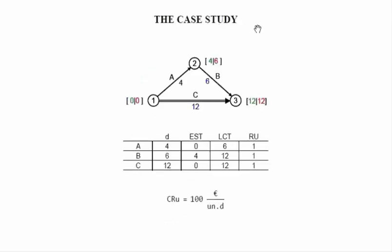In the case study we are going to use, we have a simple project composed of three activities A, B, and C. Activity A has a duration of 4 days, B is 6 days, and C is 12 days. The CPM network in this case is very simple — it includes only two paths. Introducing the durations of the activities into the network, we can easily conclude that activity C is the only one that is critical. The critical path goes directly from node 1 to the last node, node 3. We can also simply evaluate the times associated with these nodes.